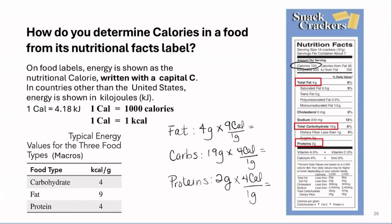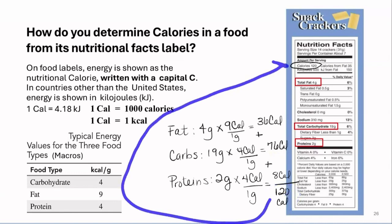If I do the first multiplication, I notice that the fat is going to contribute in terms of chemical energy 36 nutritional calories. When it comes to the carbohydrates, there's 76 nutritional calories. When I multiply the two by the four, the proteins here are going to contribute eight nutritional calories. So, in these snack crackers, the macro that is contributing the most nutritional or chemical energy is going to be specifically the carbohydrates. If I add these three numbers, then I see that this equals 120 nutritional calories, which this number matches what we have in the food label.